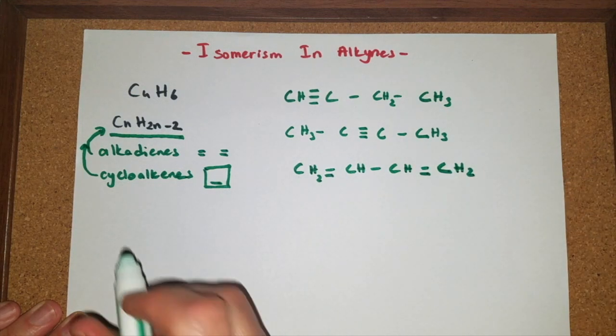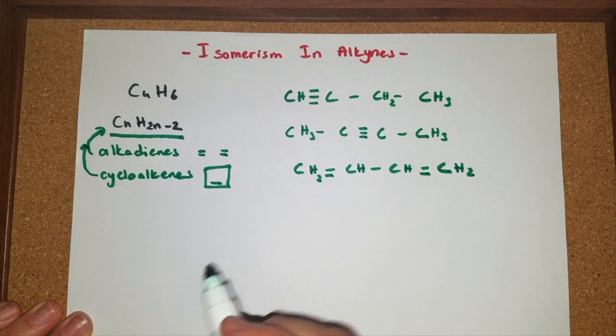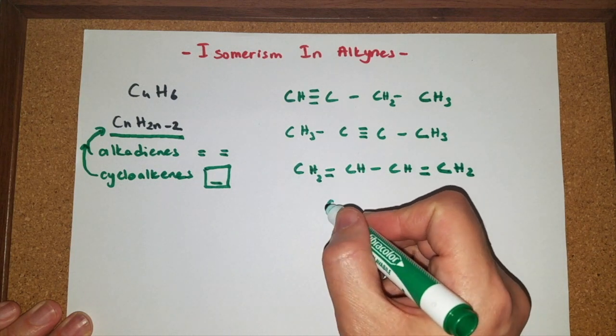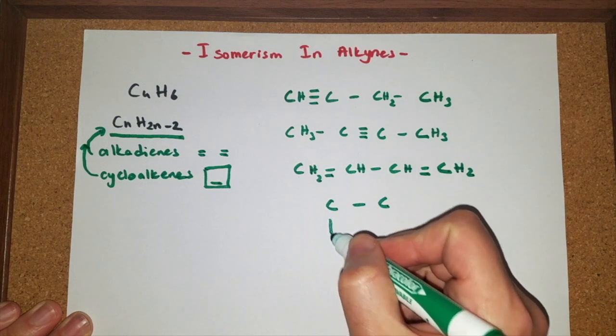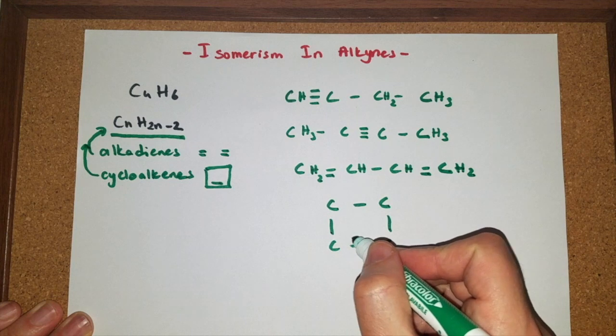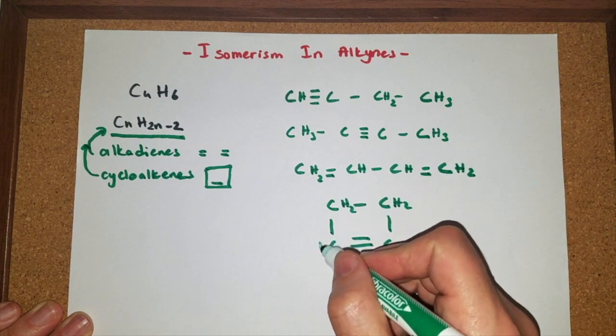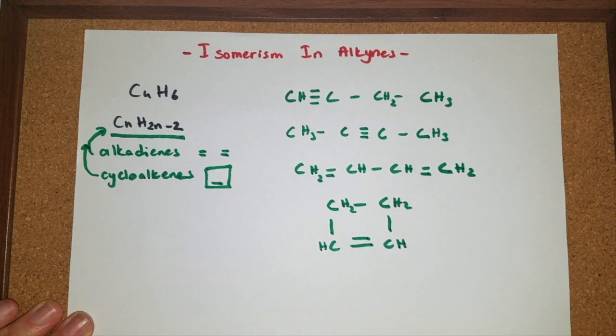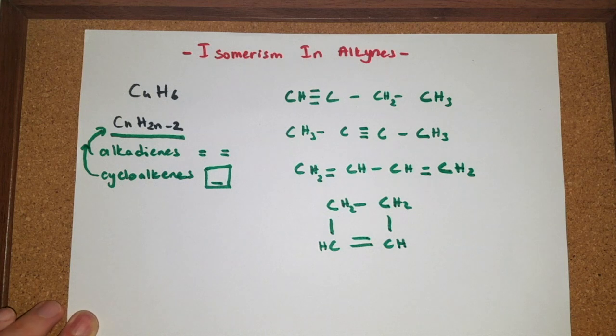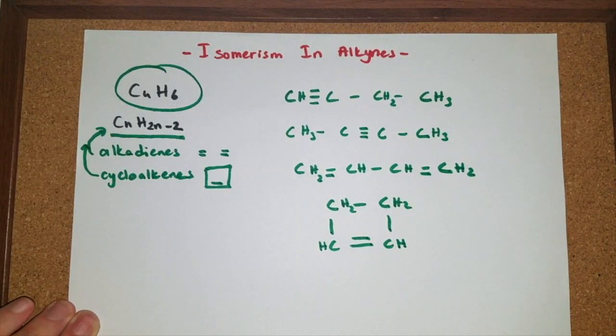Now, we can also draw a cycloalkene. Let's do that. We have four carbon atoms and a double bond. We have two hydrogens here, two hydrogens here, one hydrogen here, and one hydrogen here. These are four different isomeric compounds with the molecular formula C4H6.